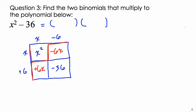How do I know this is correct? Well, let's add those four pieces up. x squared minus 6x plus 6x minus 36. Look at what's happening here. The minus 6x and plus 6x are zero. They cancel out.